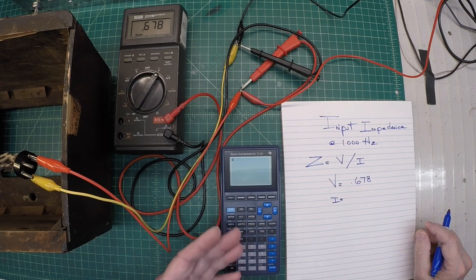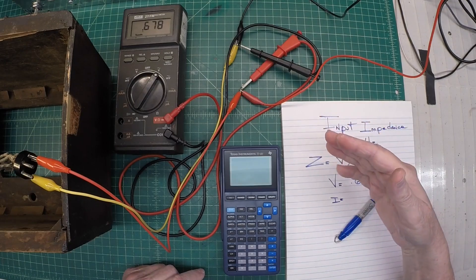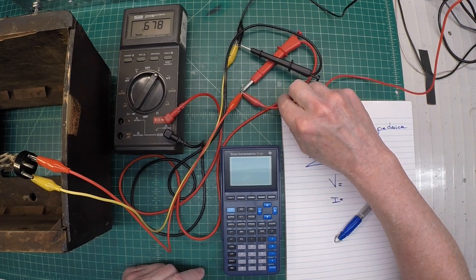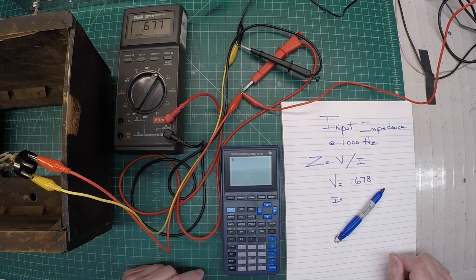Now I'm going to switch the meter, of course, to read AC current. And I've got to put the meter in series here with the signal generator in the load. So let me go ahead and do that real quick.